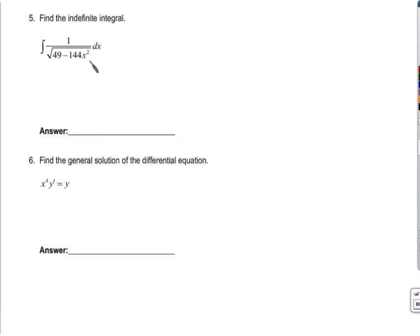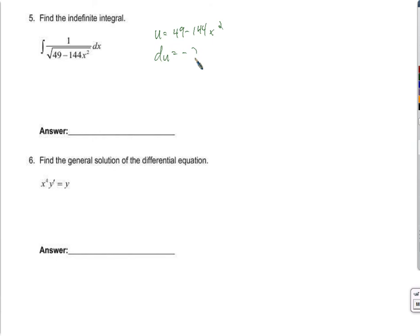Find the indefinite integral. I don't think it's the log rule, because the numerator is too simple to be the derivative of the denominator. So maybe u equals 49 minus 144x squared. Then du would have to be negative 288x — that doesn't look anything like the numerator. That's no good.